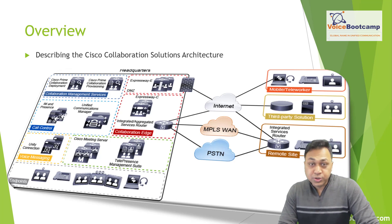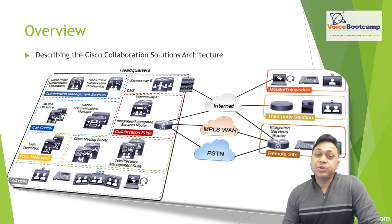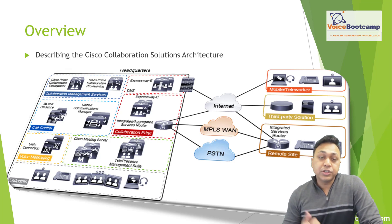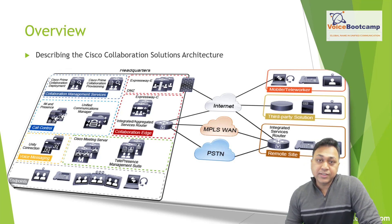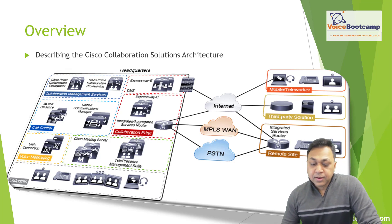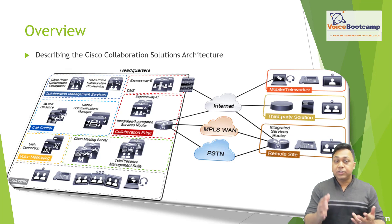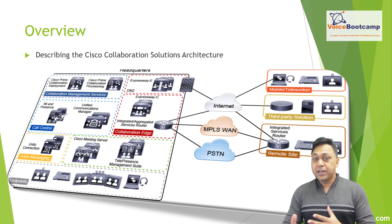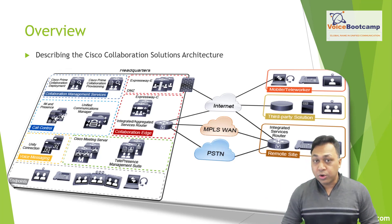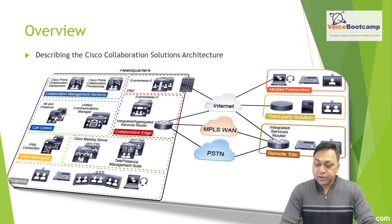We will then turn our attention to the heart of the collaboration system: Unified Communication Manager. You will learn how to define and address endpoints such as Cisco IP phones and Java clients, how to configure call routing, digit manipulation, translation, and calling privileges. Finally, you will learn how to configure protocols and codecs — choosing different codecs based on environment, whether to save bandwidth or to support more calls.